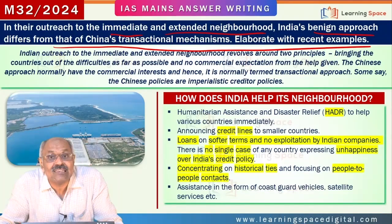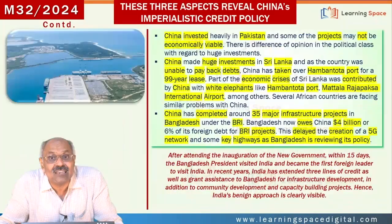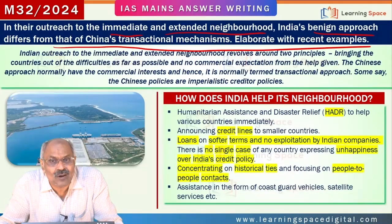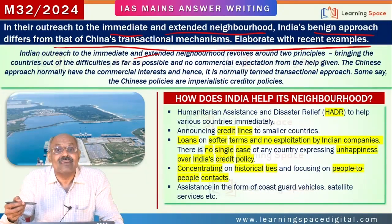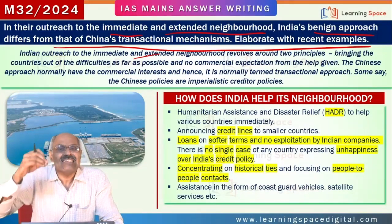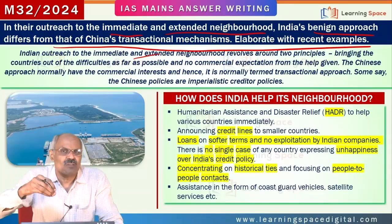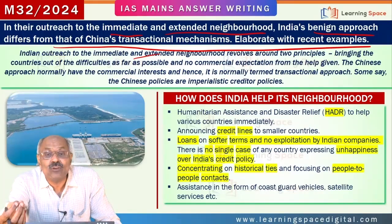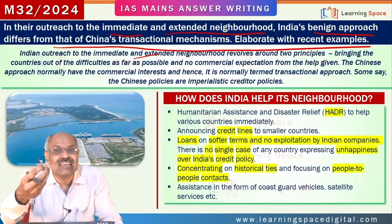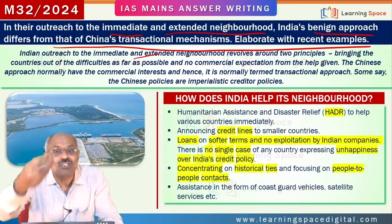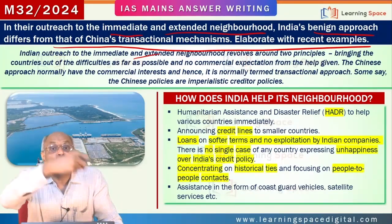You have to elaborate India's benign approach as far as its outreach to the neighborhood is concerned. China's transactional approach is also to be explained. Indian outreach revolves around two principles: bringing countries out of problems as much as possible. India supported around three to four billion dollars when Sri Lanka was in crisis. Whenever any country is in crisis, India is sending air force vehicles and ships to take out persons in distress.